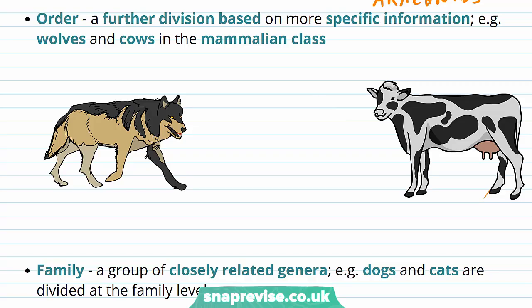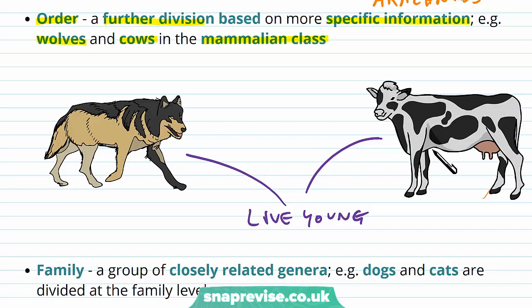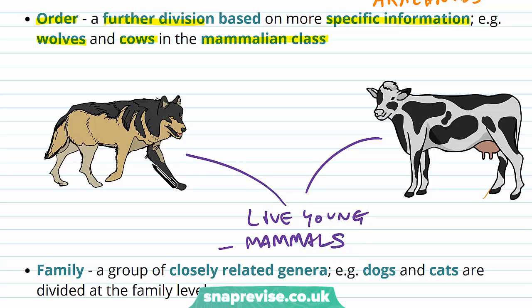We then have things divided into orders — a further division based on specific information, like wolves and cows belonging in the mammalian group. For example, mammals all breed live young, feed them through milk, and have certain properties to their physiology. So we have groups like mammals, reptiles, and birds — groups of organisms that share very similar physiology.